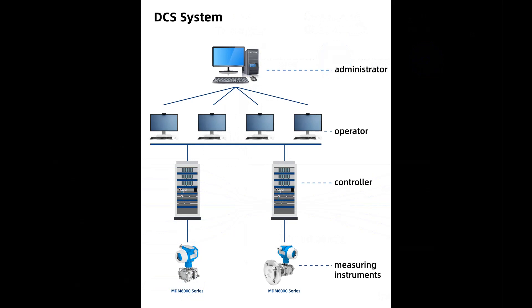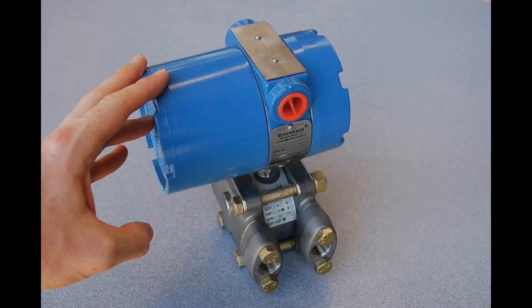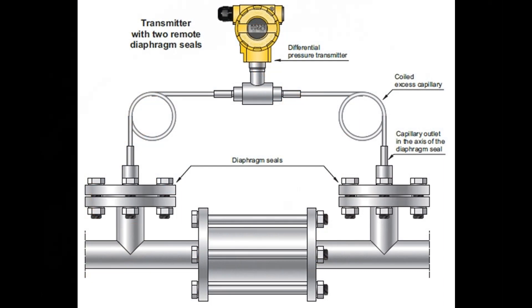In summary, a DP transmitter measures differential pressure by comparing the pressures at two points in a fluid carrying system, typically upstream and downstream of a flow restricting element. The transmitter then converts this differential pressure into an electric signal, often with optional square root extraction and compensation features for accurate flow measurement.